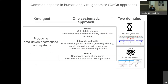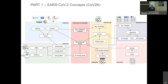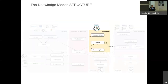We essentially repeated the approach we had worked on for human genomes, now at the viral level. The goal is having data-driven abstraction in the system — one approach meaning modeling, integrating, building databases, and providing search systems — across two domains: human genomics and viral sequences. I want you to understand the structure of the viral genome of SARS-CoV-2.